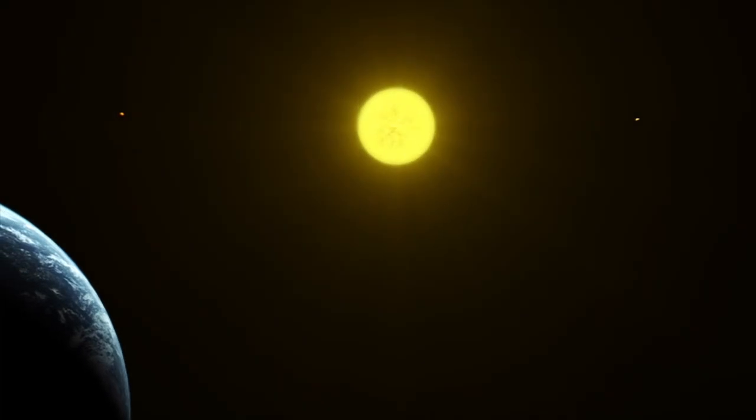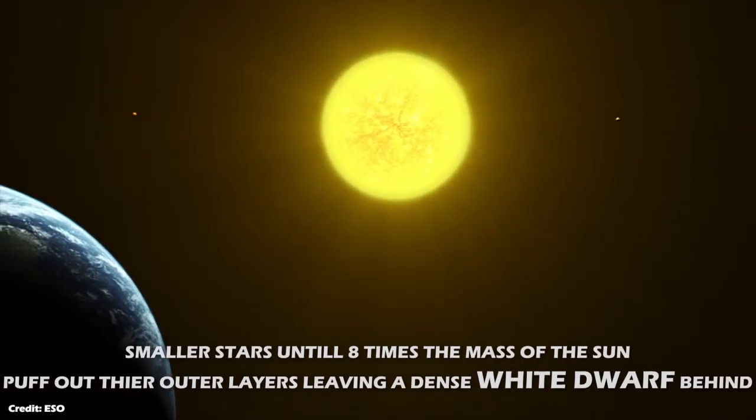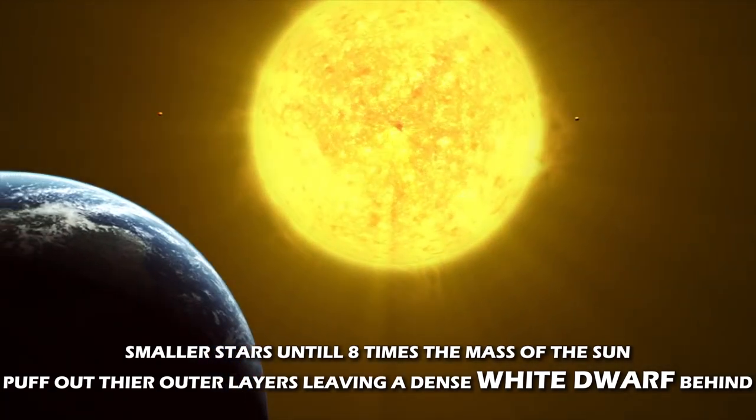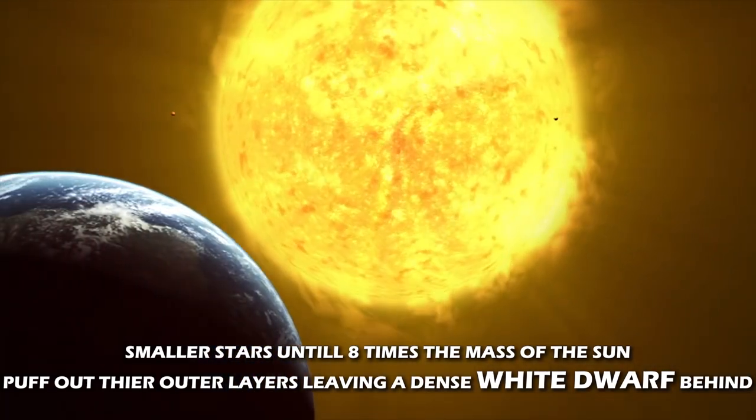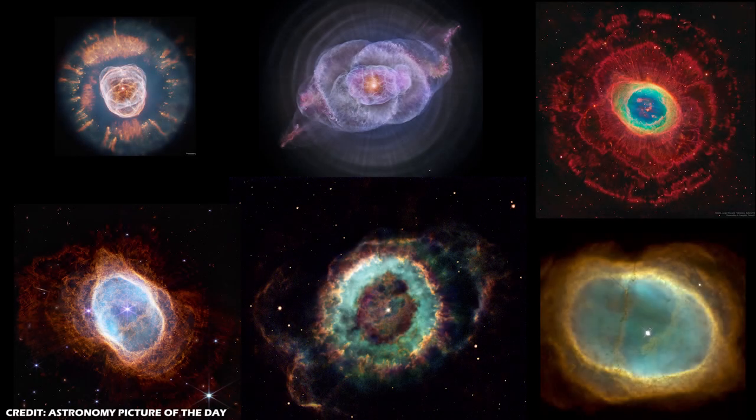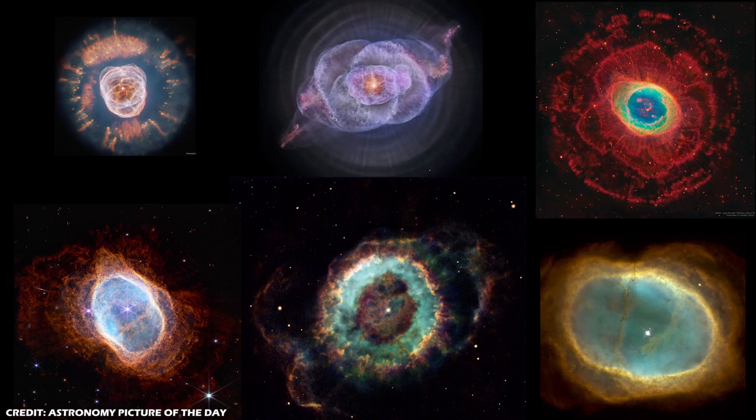Stars typically end their lives in two ways. Smaller stars, up to eight times the mass of our sun, puff out their outer layers leaving a dense white dwarf behind. These are the beautiful planetary nebula we see. If you look closely you can spot the white dwarf that was left behind at the center of each one of them.